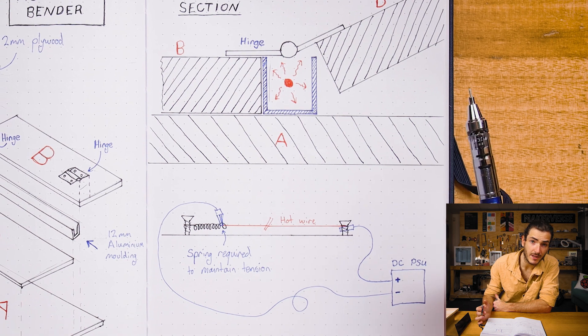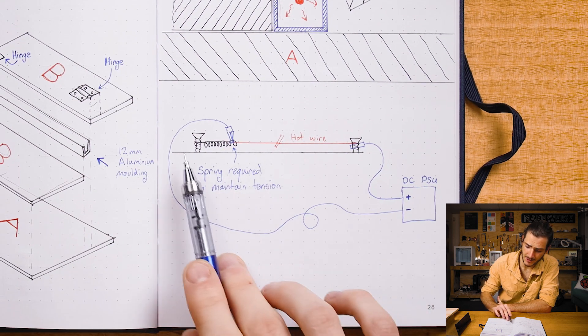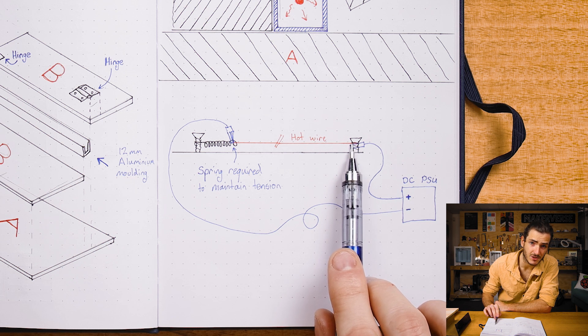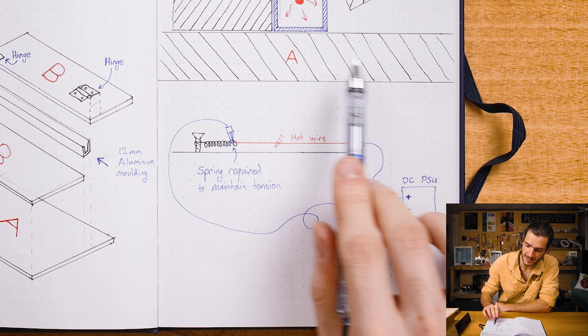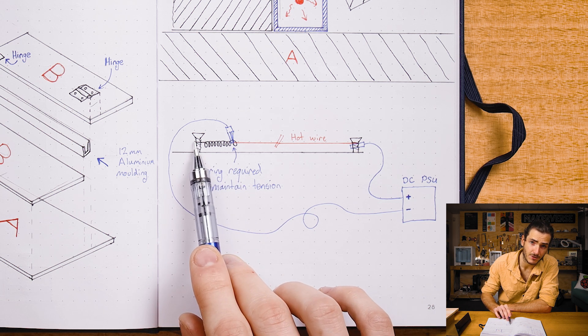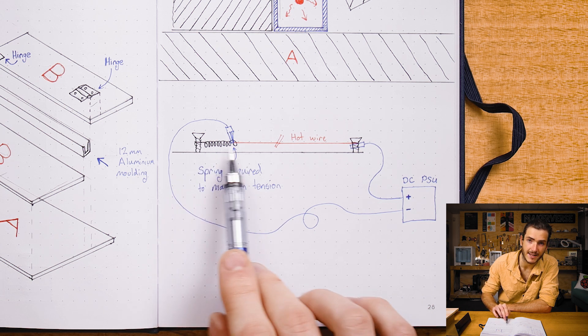To secure that nichrome wire, I've tied one end around a screw that's driven into the A plate at the end of the channel, and on the other end is another screw that connects to the wire by a tension spring.